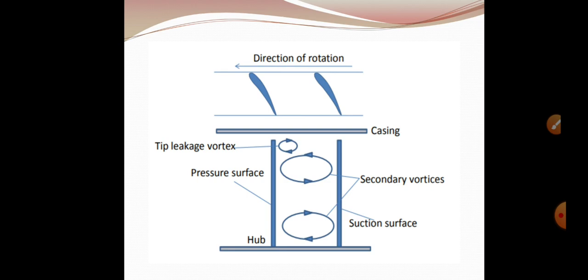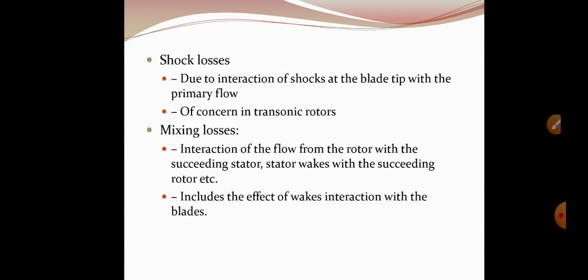Here you can see tip leakage vortex formation because of the rotation, and at the hub also you will be able to see that secondary vortices and suction surface formations. Shock losses due to interaction of shocks at the blade tips with the primary flow of the corner in transonic rotors.